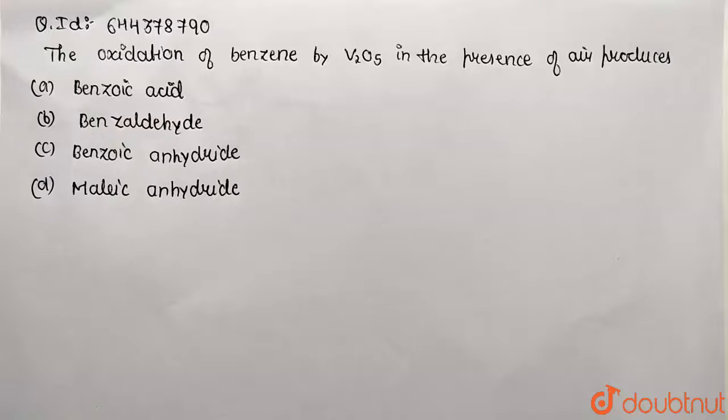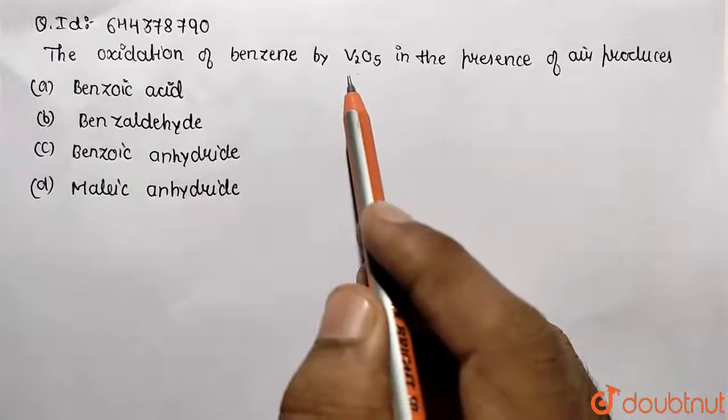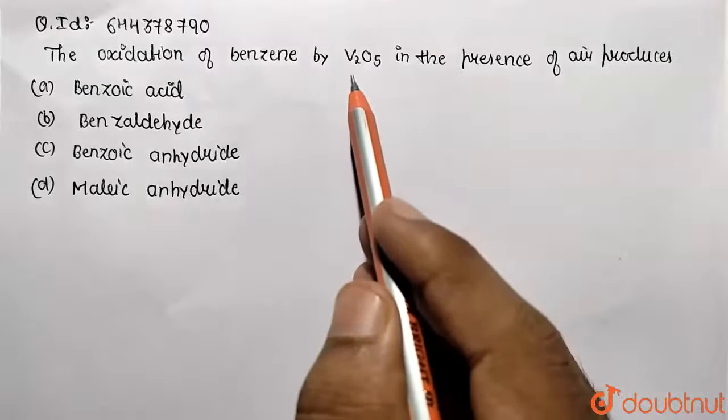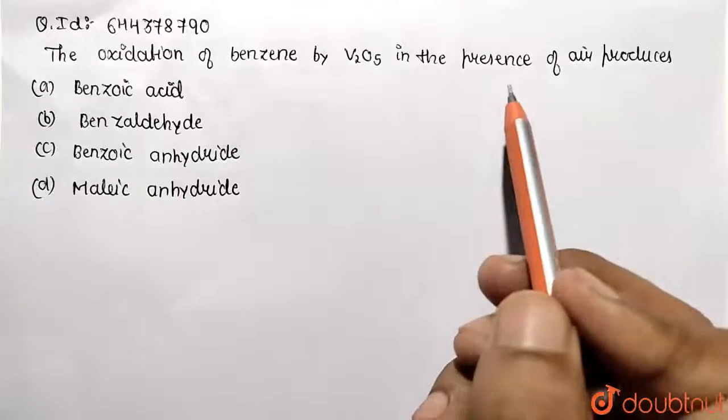Hello students, in this given question, we need to perform the oxidation of benzene by using vanadium pentoxide, which is given as V2O5, in the presence of air.